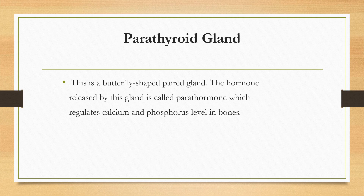The parathyroid glands are four small glands embedded in the thyroid gland, which is a butterfly-shaped paired gland. The hormone released by this gland is parathormone, and its function is to regulate the calcium and phosphorus levels in the blood.